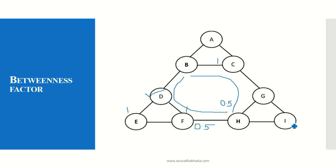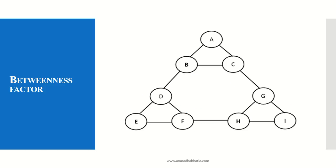The total betweenness centrality for node D is 7. From A to E it is 1, B to E is 1, C to E is 1 — that's 3. Adding A to F (1) and C to F and B to H contributions, we get 5 plus 0.5 plus 0.5 equals 6, and with the remaining paths it totals 7. Betweenness centrality for D is 7 and for G is also 7.